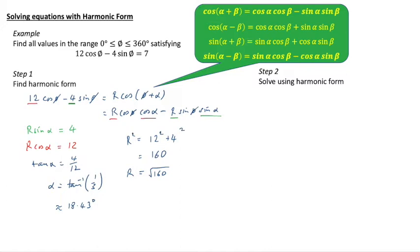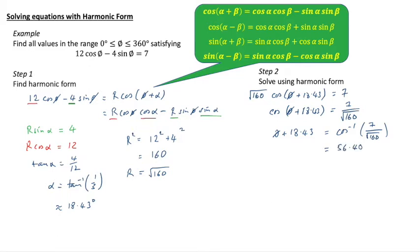Now we can solve this using harmonic form. We can now say that instead of 12 cos phi minus 4 sine phi equals 7, we have root 160 cos of phi plus 18.43 equals 7. We can divide through by root 160, and we can do cos to the minus 1 of that. That gives us 56.40. Notice I never even worked out the root 160 in the end because when it came to it, it was going to go into a calculator, so we don't care too much what its actual value was.